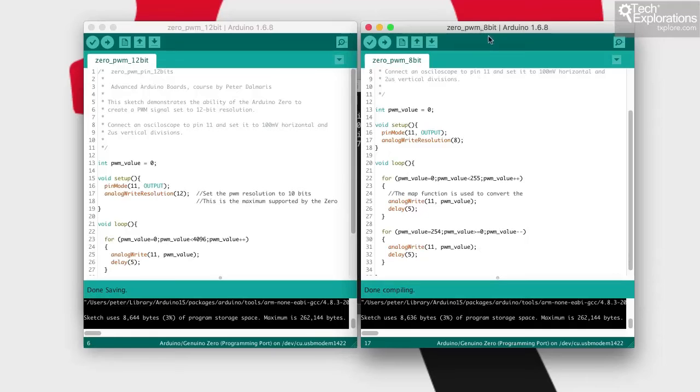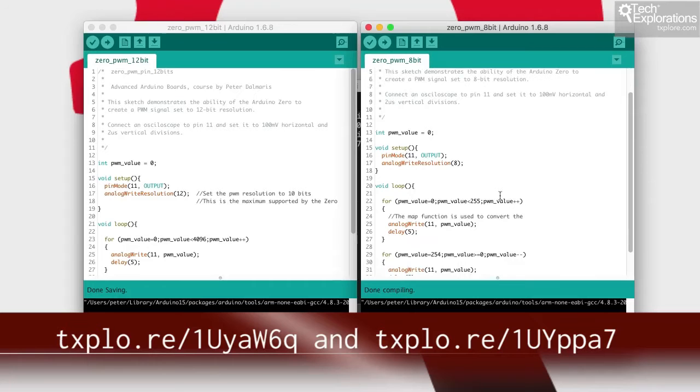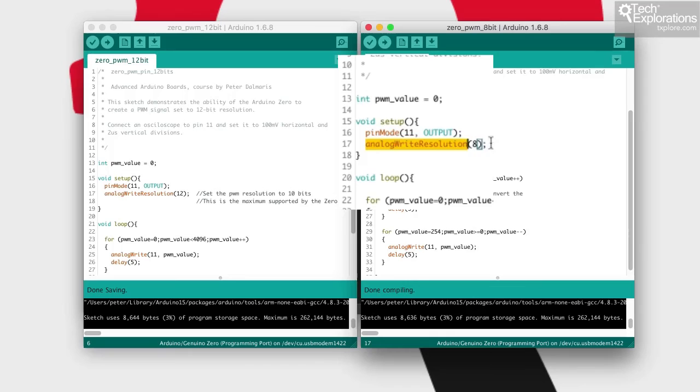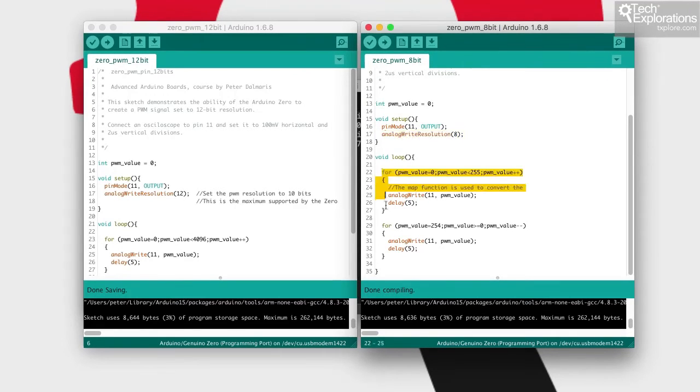First I'll use the default 8-bit resolution on the Arduino Zero, and to do that I use analogWriteResolution(8). I don't really have to do this because by default the PWM resolution is set to 8, but just to make it explicit for the purposes of this demonstration, I'll explicitly set it to 8. Then I use two loops: one to increase the duty cycle from 0 to 254, and the second one to decrease it from 254 down to 0.